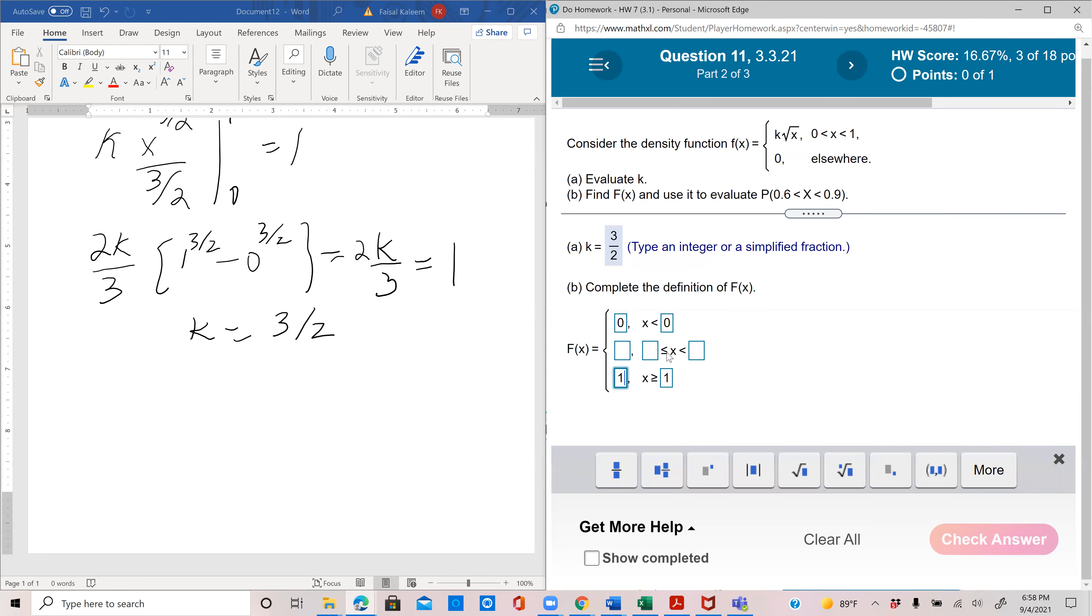And now the main thing is to find this middle part. So since this is less than 0, this would be greater than or equal to 0. And since this is greater than or equal to 1, this would be less than 1. So here as we did in the previous problem, for x between 0 and 1.